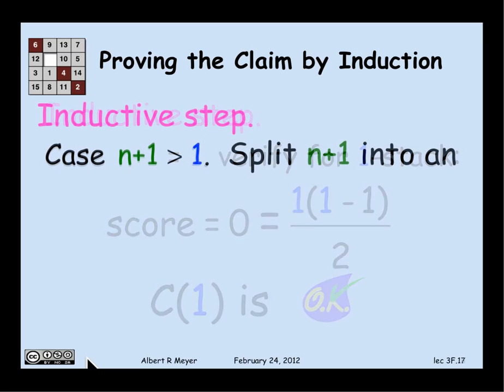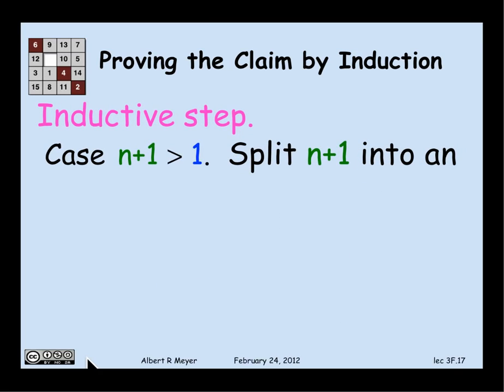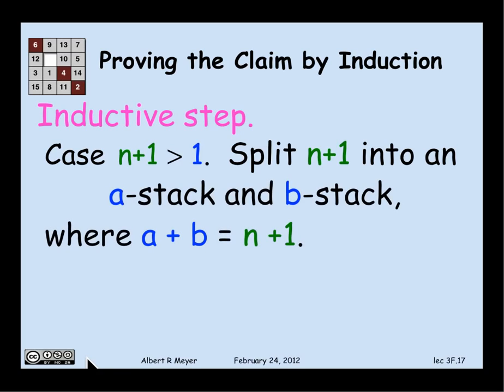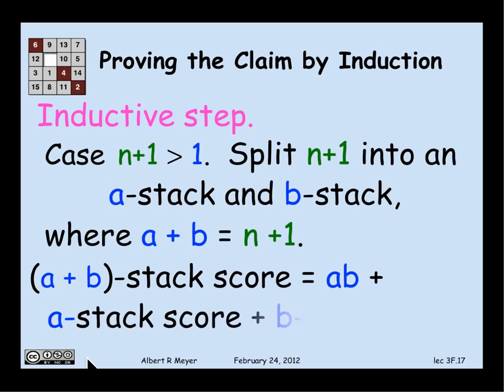Well, the other case in the inductive step is that N+1 is greater than 1. This is the interesting one because now it's possible to make a move. So since N+1 is greater than 1, it's two or more blocks. I can make a move into two stacks that are both of positive size. So suppose I do that. Suppose I split the stack of size N+1 into an A stack and a B stack where A and B sum to N+1. And what's my score going to be then? Well, my score on that move that I make where I split into the A stack and the B stack is AB. And the rest of the game consists of playing as well as I can on the A stack and as well as I can on the B stack.